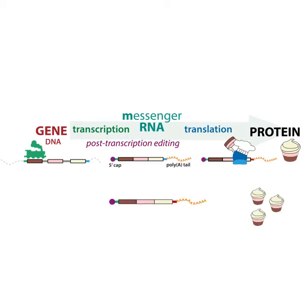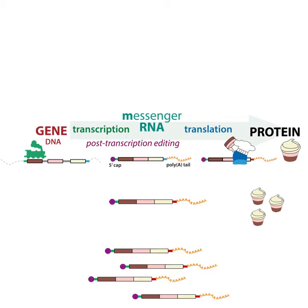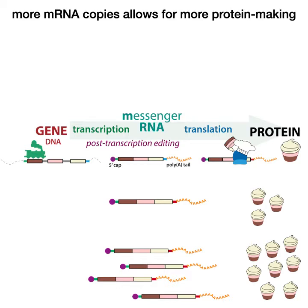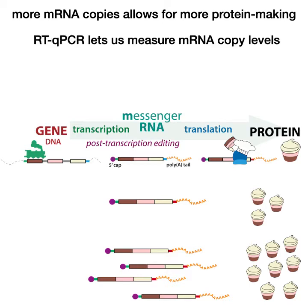For each mRNA you can make a lot of protein. There's not a hard and fast rule of how many you can make per copy — it varies depending on the mRNA. But the basic idea holds that the more mRNA copies you make, the more protein you can make. So if we have an idea of how many mRNA copies there are, we can get an idea of how much protein is being made. And RT-qPCR lets us do this.